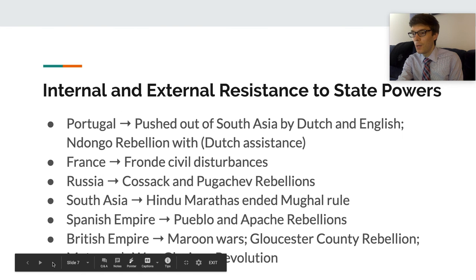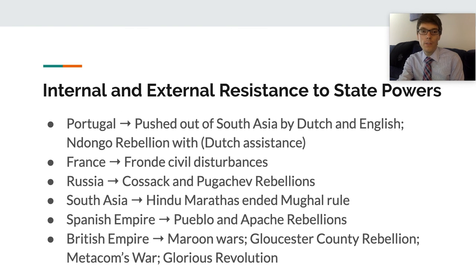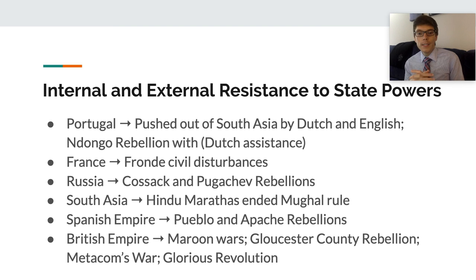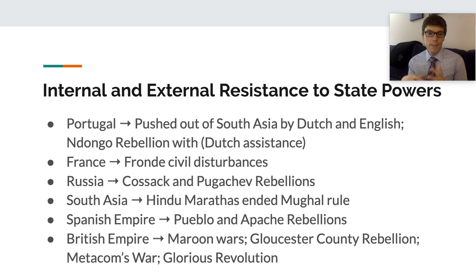Colonial influence was not without resistance. As empires developed and changed, many groups resisted state expansion through a variety of means. By the 17th century, the Dutch and English had basically pushed the Portuguese out of South Asia. The Portuguese then looked to Africa as an alternative, where they had carried out slave raids since the 15th century to build trading post colonies.